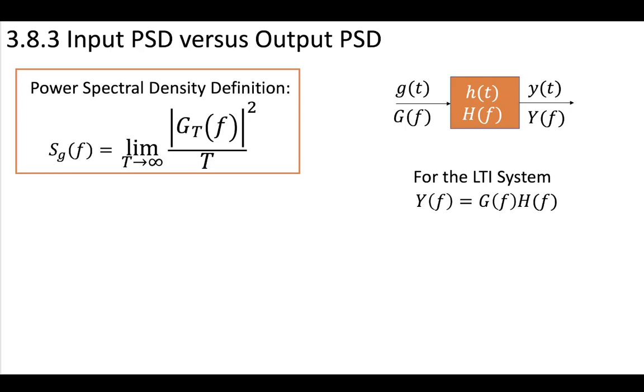What is the relationship between power spectral density at the input and power spectral density at the output? For a general LTI system where you have the output Y(f) equal to the input multiplied by the transfer function in the time domain,